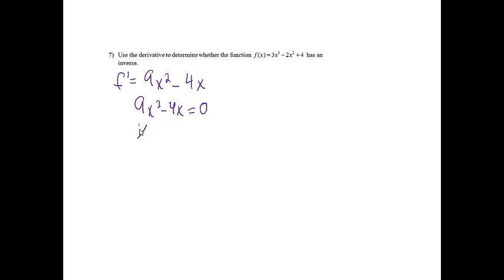Factoring out an x, I'll have 9x minus 4. So my critical numbers will be 0 and 4 ninths. And then if I make an f prime chart, 0 and 4 ninths.